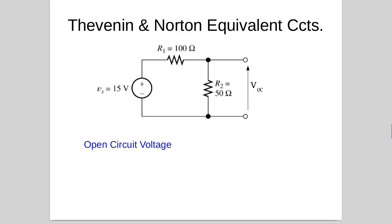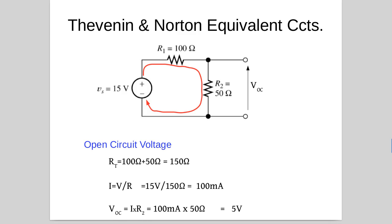For the open circuit voltage, we want to find the current in the loop. With no current flowing out of the output terminal, the 100 ohm and 50 ohm resistors are in series, giving a total resistance of 150 ohms. Using Ohm's law, I = V/R gives 15 volts over 150 ohms, which is 100 milliamps. This is a voltage divider network, so the voltage across the 50 ohm resistor is I × R2 = 100 milliamps × 50 ohms = 5 volts. The open circuit voltage is 5 volts.